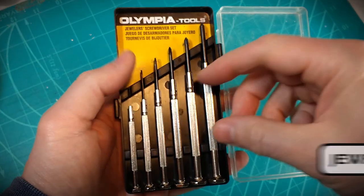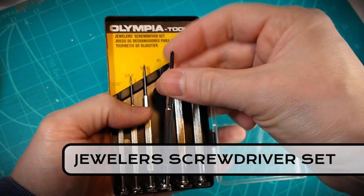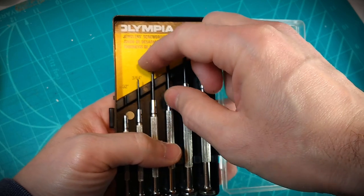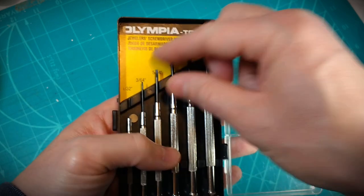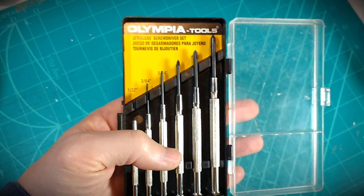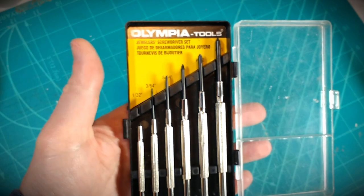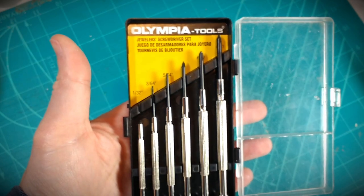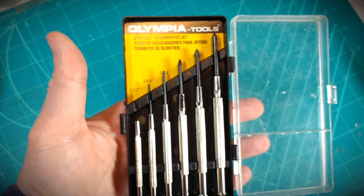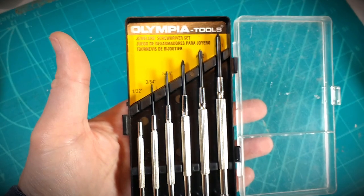A jeweler's screwdriver set is great. These are such small heads to be able to get into really tough, fine little screws. Again, not even just for the toy repair, but also around the house you'll find it's very helpful.